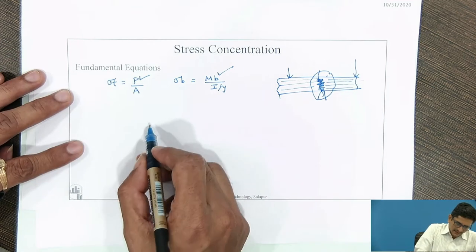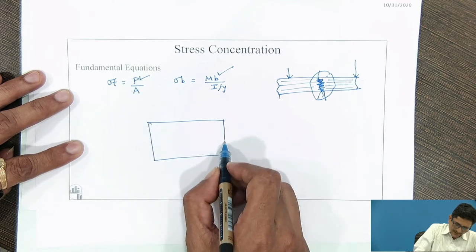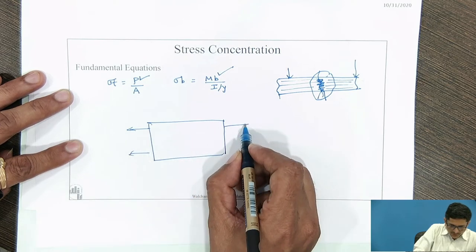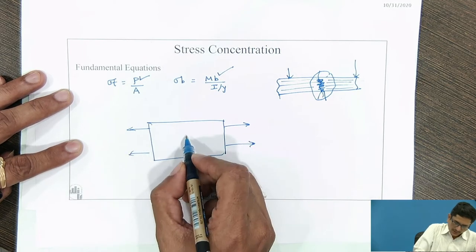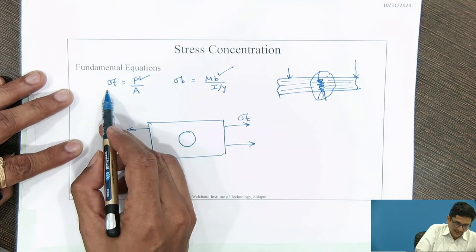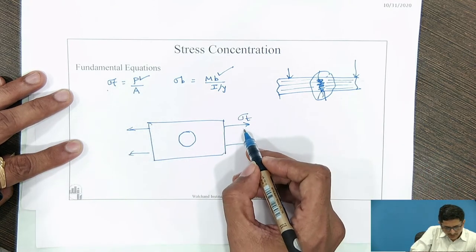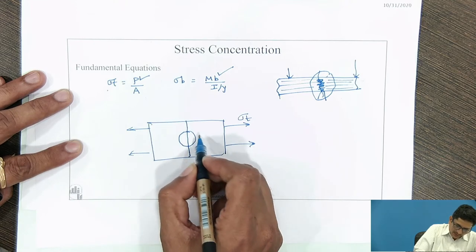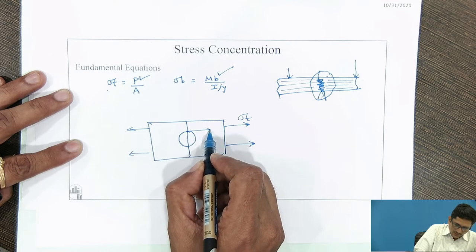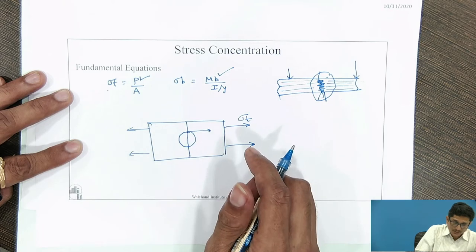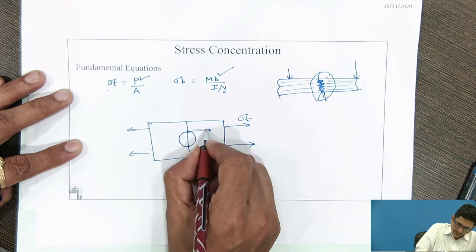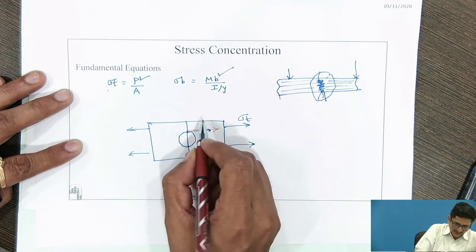If this is a plate which is loaded under tensile load, tensile force which causes sigma_t to develop in the material, if the plate is having a hole over here, it has been seen that at the location near the discontinuity, this value exceeds the normal stress value. This is sigma_t max.